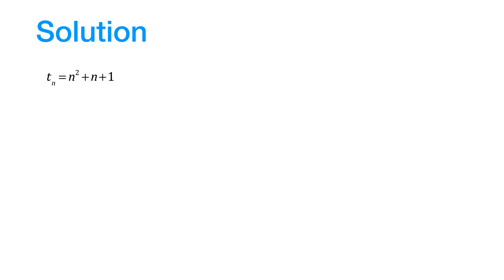We can now find out the formula for Sn. So, Sn would be given by sigma n squared plus sigma n plus sigma 1. Now, we do have formula for sigma n squared and sigma n.